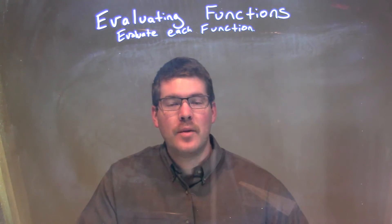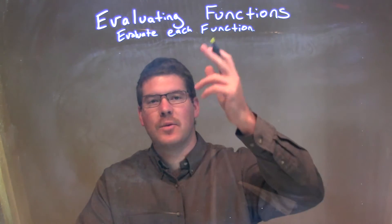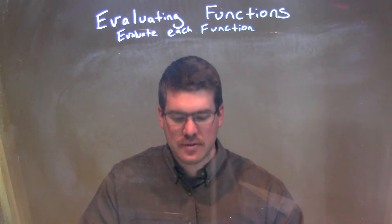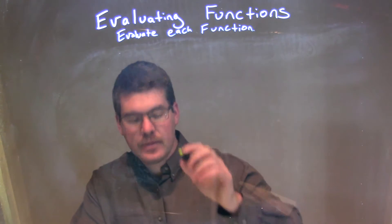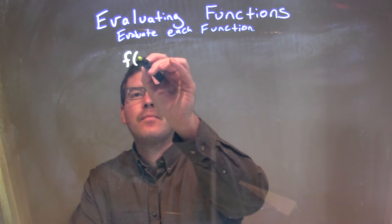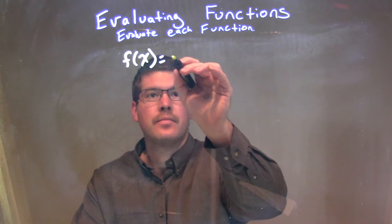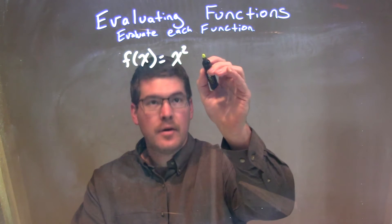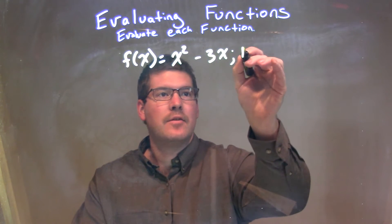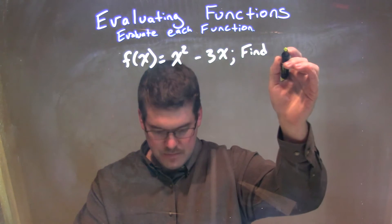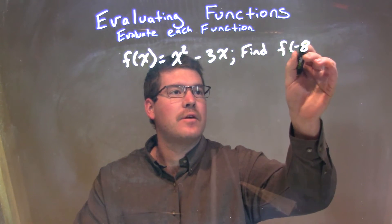Hi, I'm Sean Gannett, and this is Minute Math. Today we're going to learn about evaluating functions. So, if I was given this function, f of x is equal to x squared minus 3x, and we need to find f of negative 8.